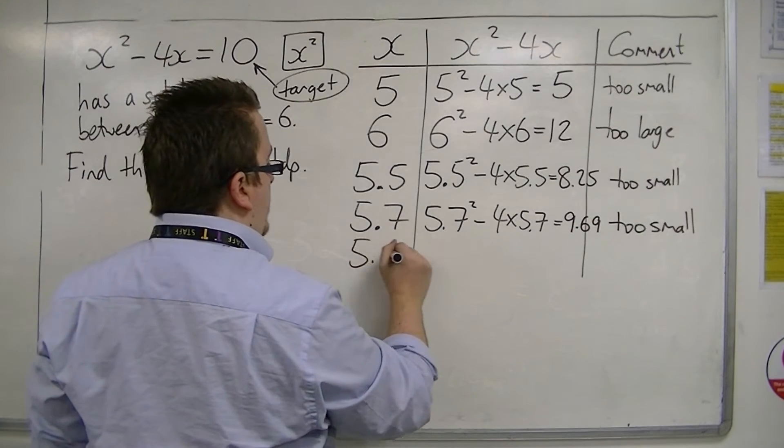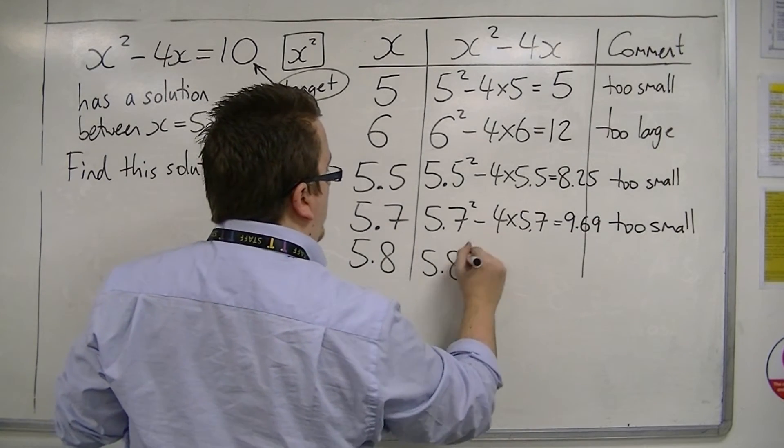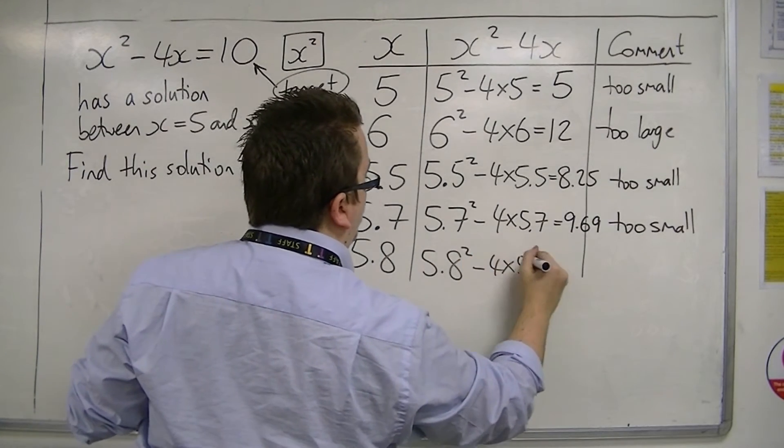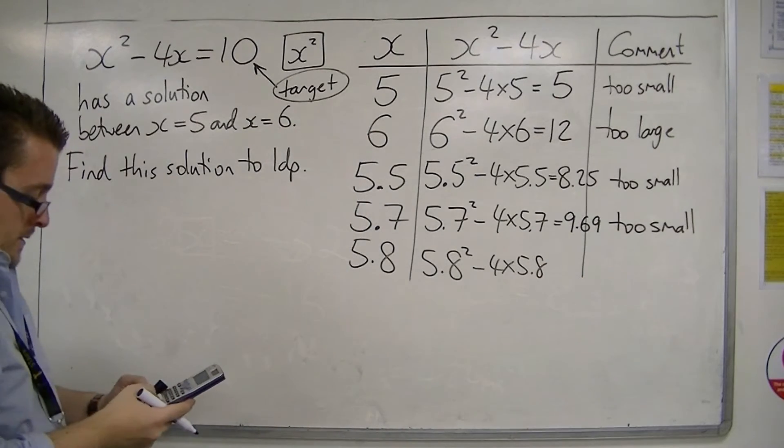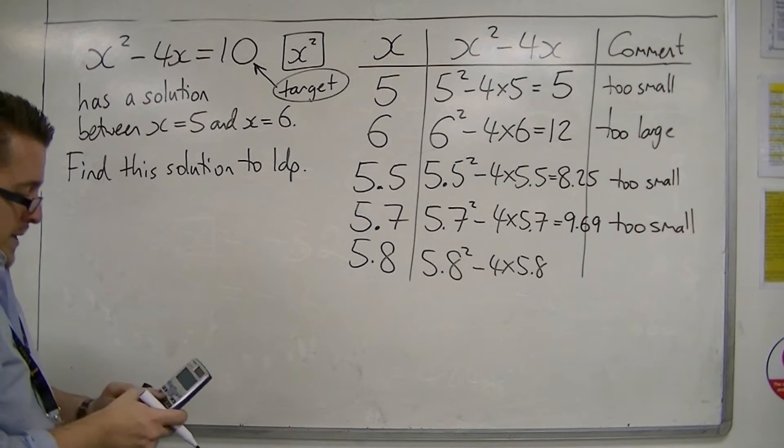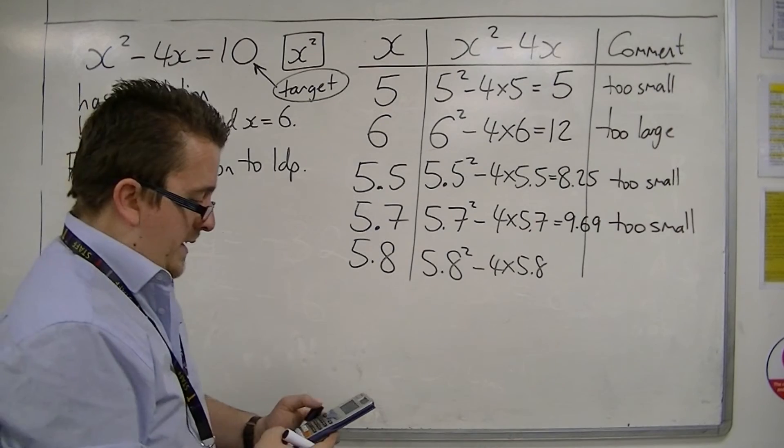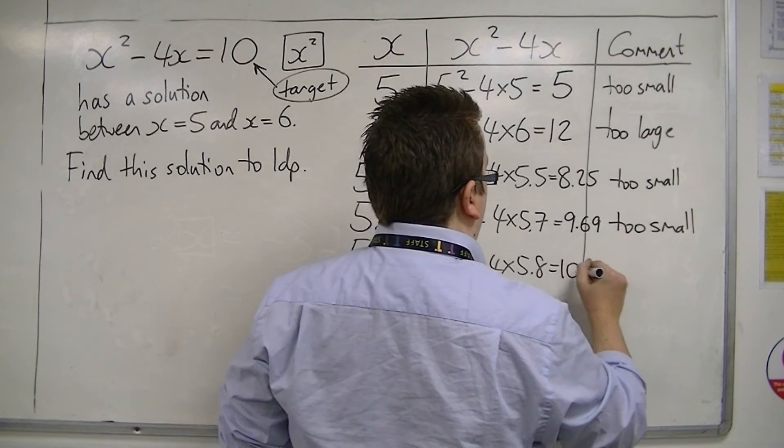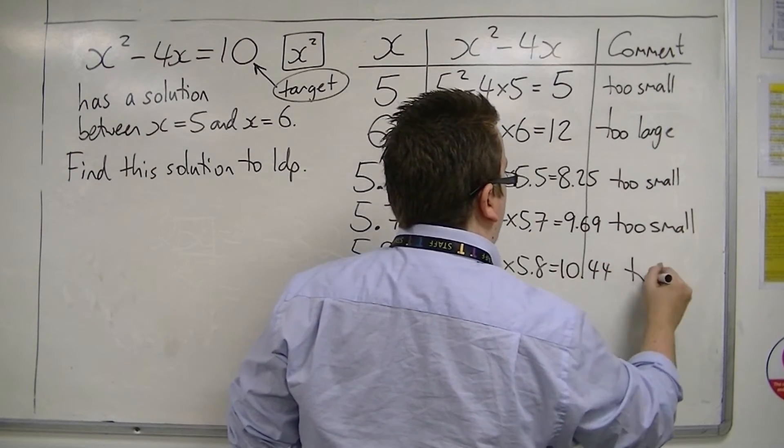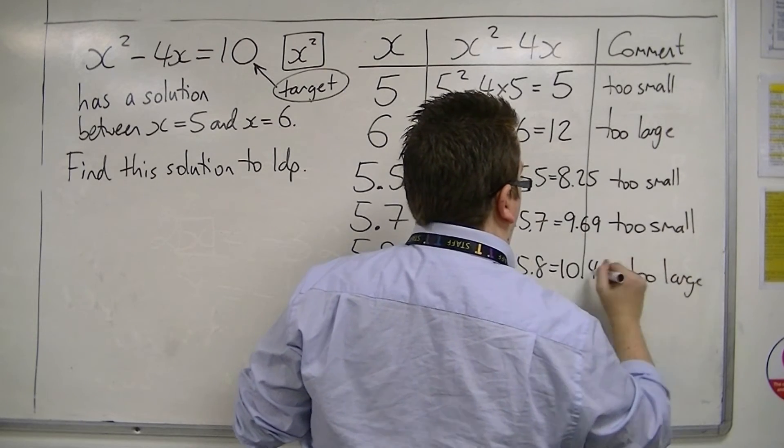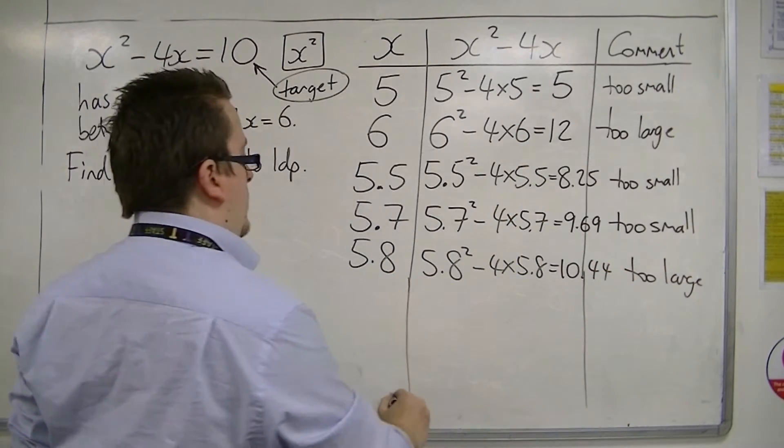So 5.7 is too small. We're going to have to try 5.8. So 5.8 squared, take away 4 lots of 5.8. 5.8 squared, take away 4 lots of 5.8, is 10.44. Now that's too large.